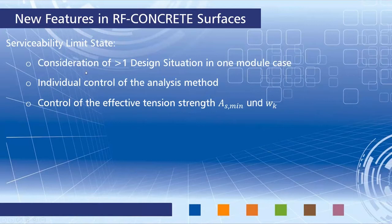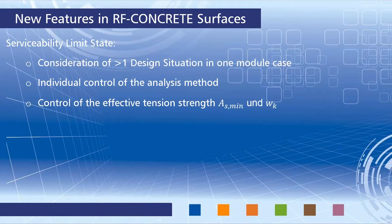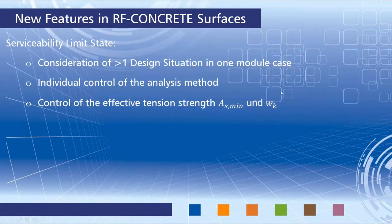For those already using RF Concrete Surfaces, I want to summarize new features released in the latest customer version 5.07.0703. We made quite a few changes in the serviceability limit state: you can now consider more than one design situation in one module case, individually select your required analysis methods, and define separate concrete tensile strengths for the minimum reinforcement and for the limitation of crack width. Previously you defined only one global concrete tensile strength — now you can separate between these two cases, which is very important as you often need to decrease the concrete tensile strength for crack width design.